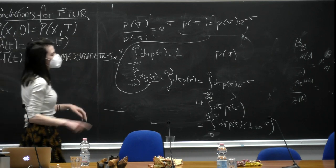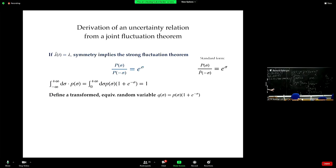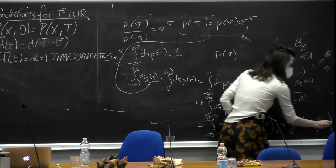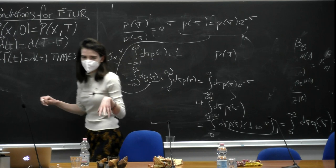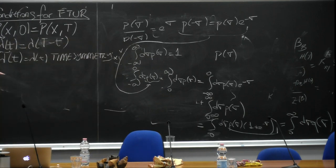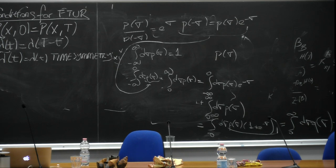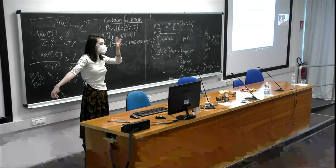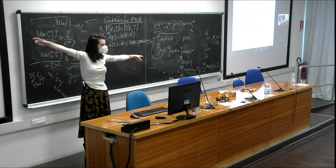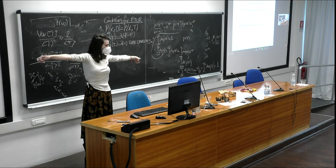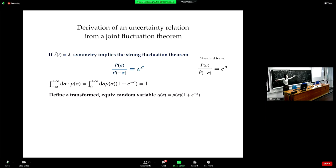This is how you get to this expression on the screen. This allows us to define a new transformed probability distribution, Q(σ), that is normalized to 1. You took your random variable, entropy production, that can take values from minus infinity to infinity, and modified the distribution. You're now treating it as if it's a random variable that takes values between 0 and infinity, with Q describing the same statistics as the original P(σ).